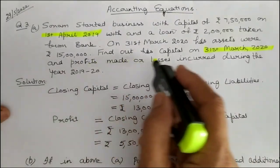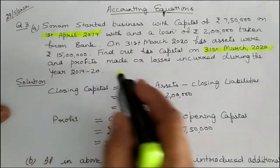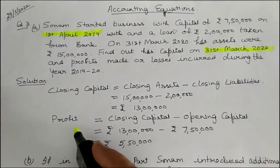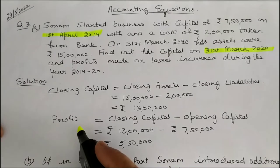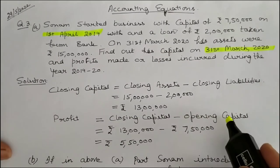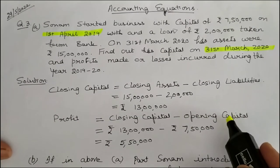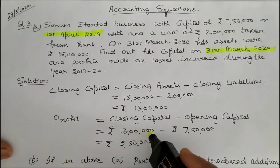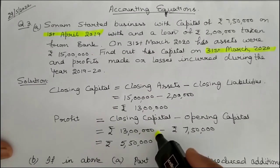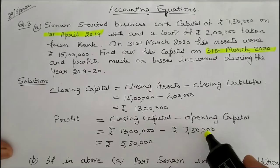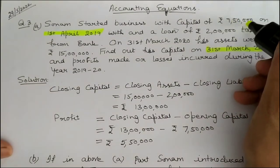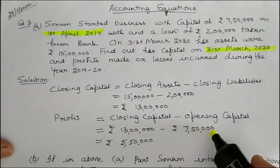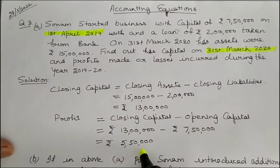Now, you have to find out profits made or losses incurred during the year. What is the formula of profit? Profit is equal to closing capital minus opening capital. The opening capital is given in the question as 7,50,000. Therefore, profit is equal to 13,00,000 minus 7,50,000, which equals 5,00,000.